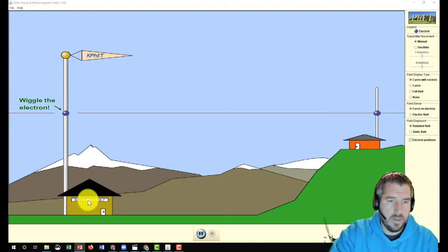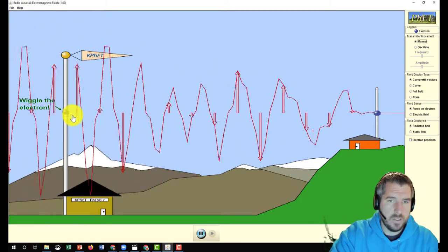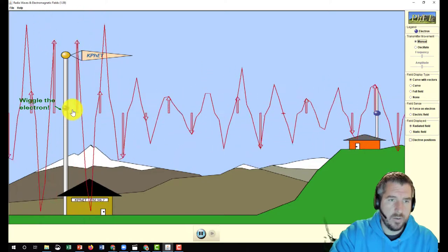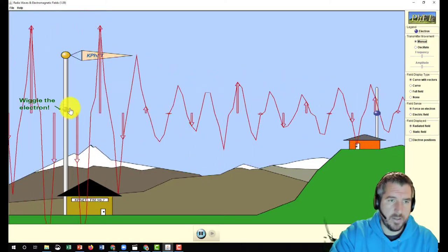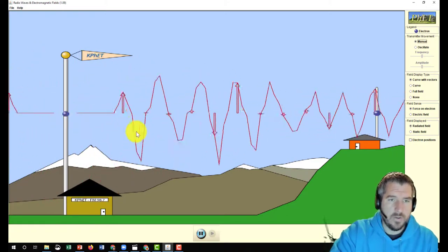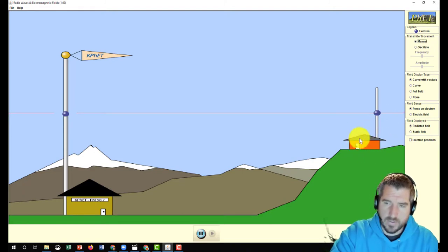But the idea is here's the radio station and it's more complicated than this but not too much more complicated. They just put electricity through a big rod and they wiggle the electron and that makes waves that go through the air, special types of waves called radio waves. We'll talk about what they are in a second. Those waves go through the air and they make a little wiggle on the electron at your house, in this case, or you could think of your car.